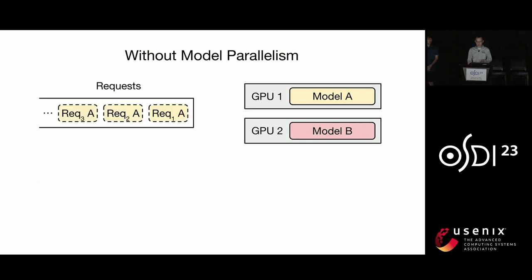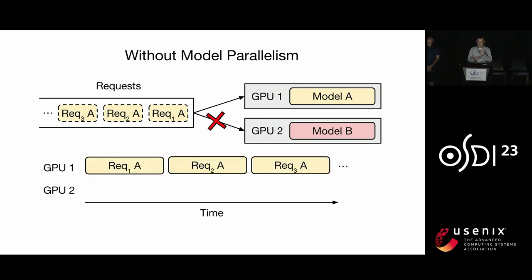Now suppose we face a burst of requests to model A. In this case, we can only send these requests to GPU 1 because only GPU 1 has model A's replica. If we visualize these requests in a timeline, we can see that although GPU 1 can be fully utilized, GPU 2 will be completely idle.